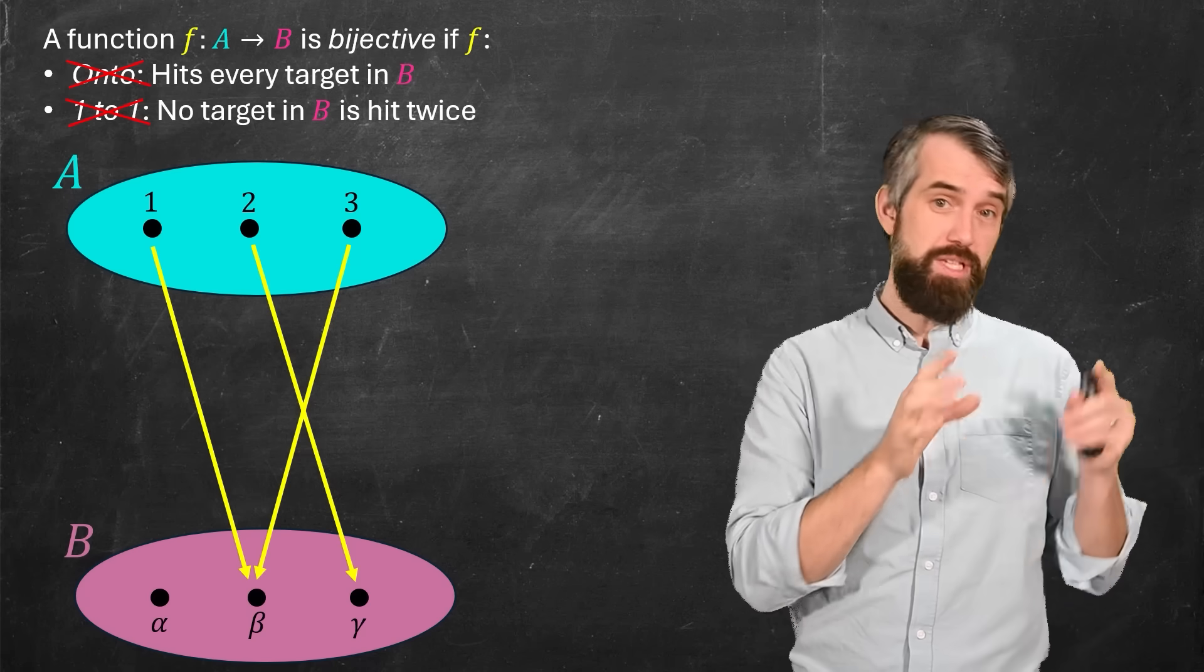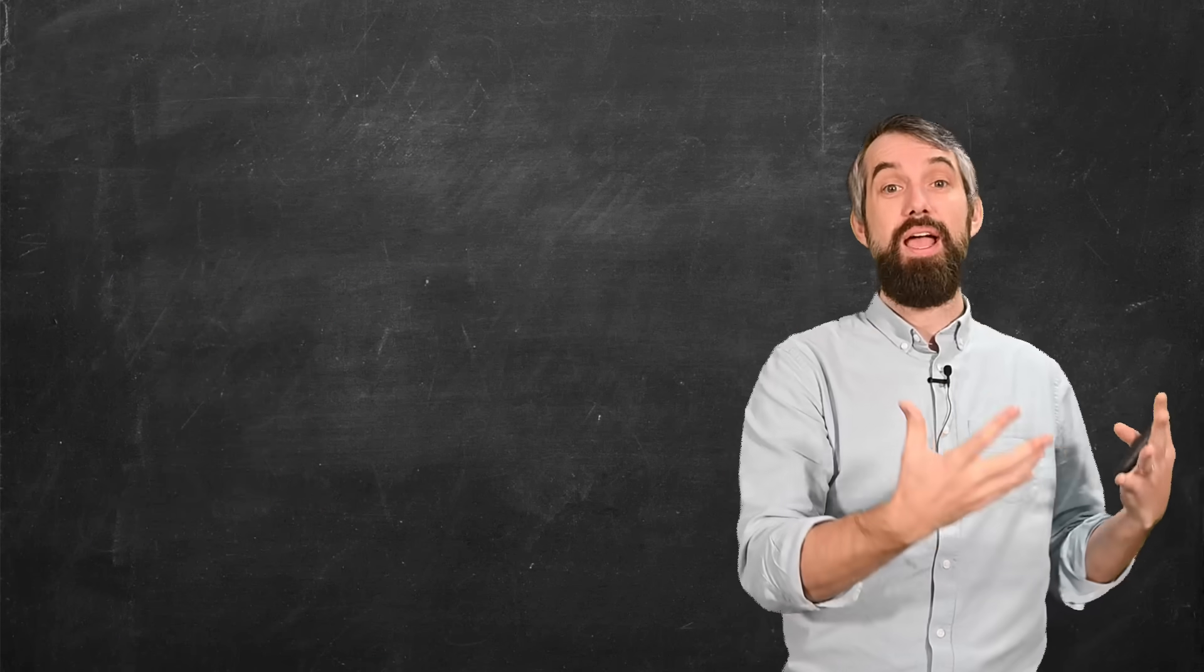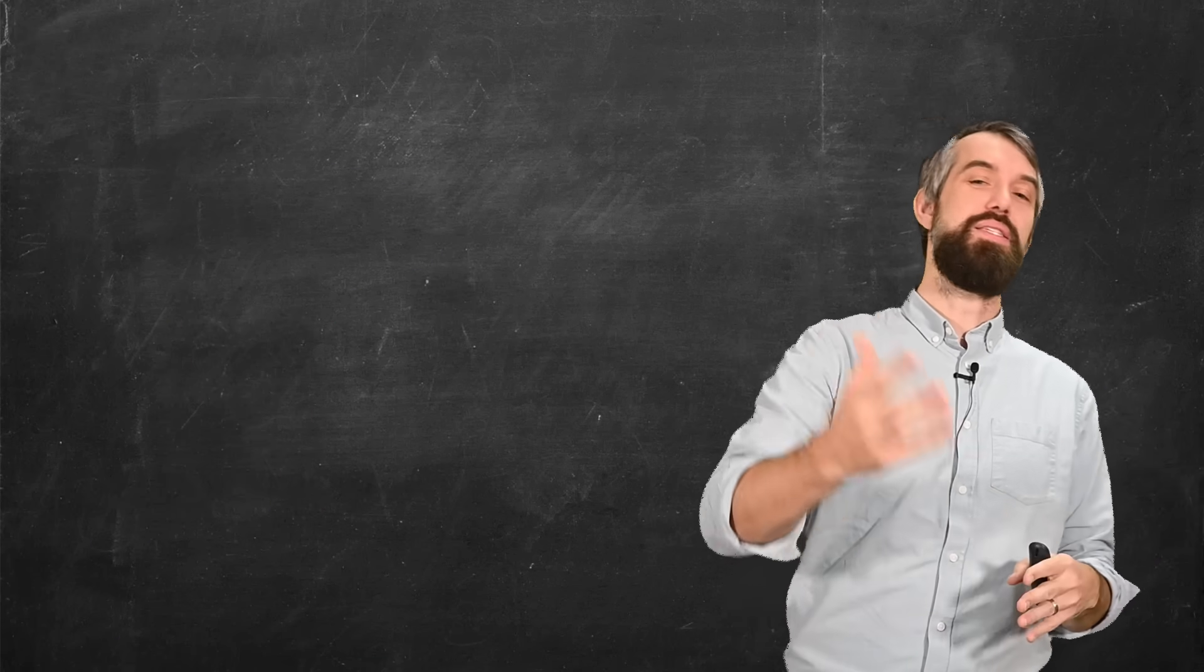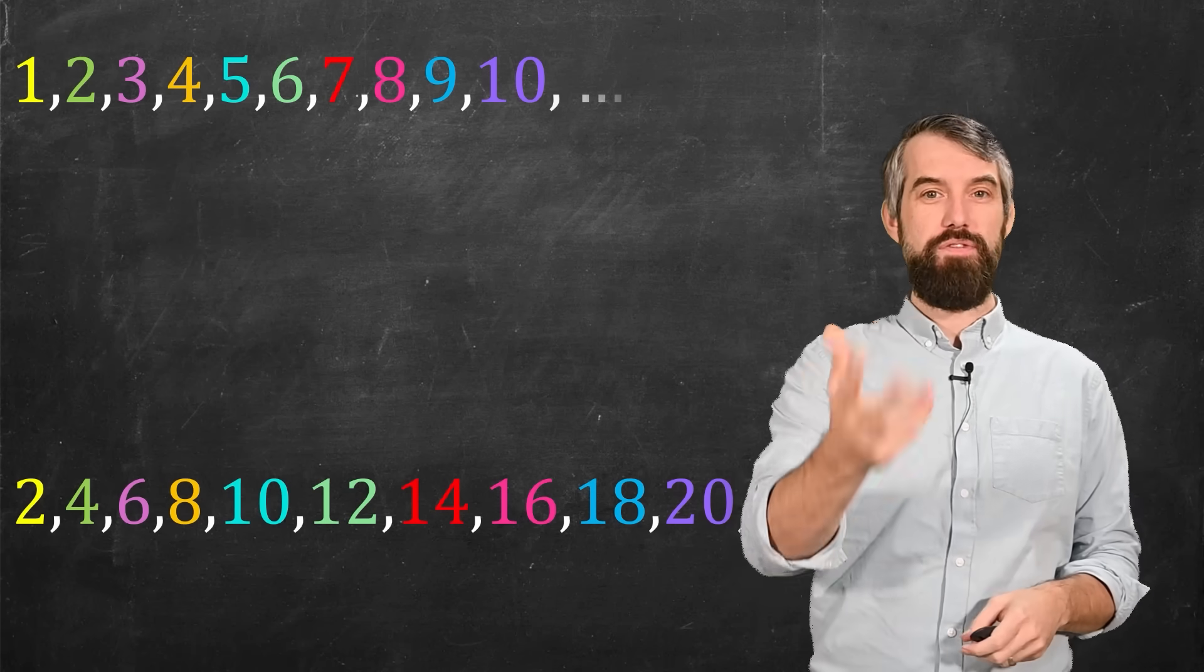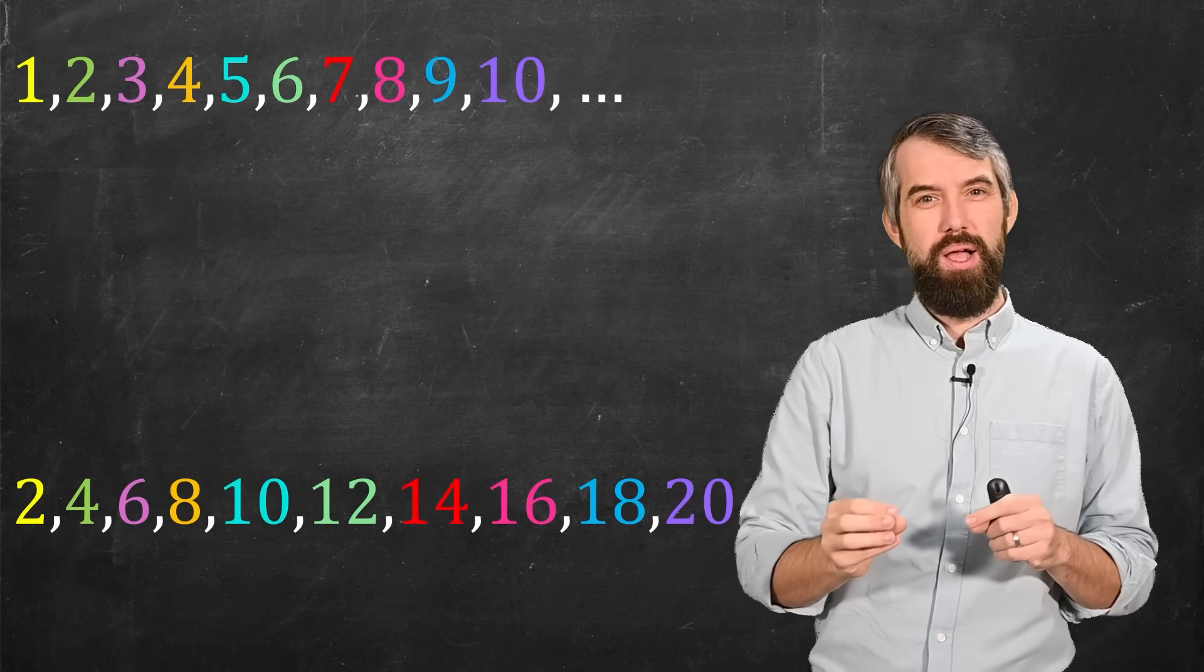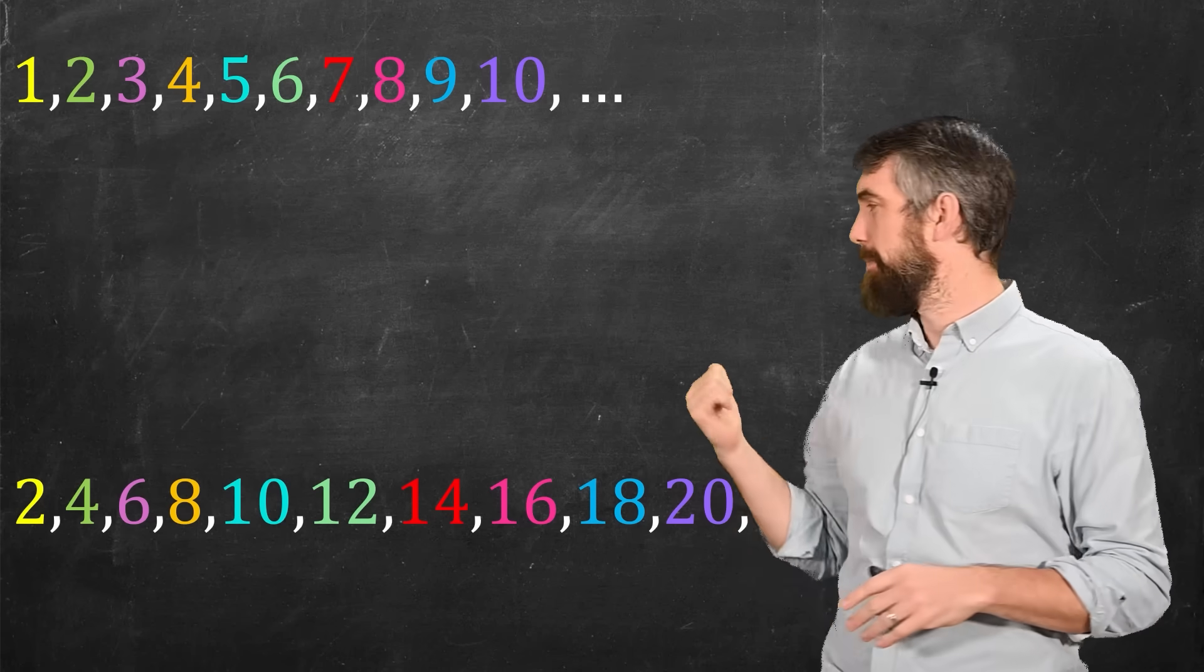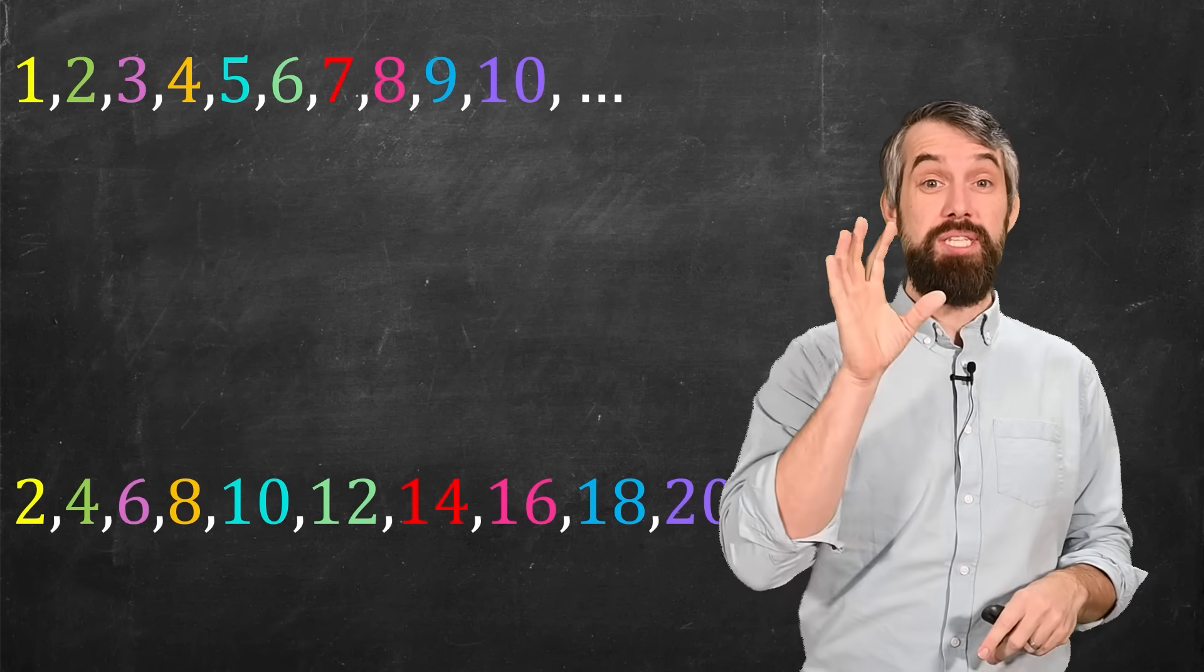In general, if you have a function that's bijective, this is our notion in mathematics of the set having the same basic size. We extend this to all sorts of funny infinite sets. For example, if you consider all the natural numbers, and then all the even natural numbers, like 2, 4, 6, 8, 10, and so on. I mean, are those the same size? According to mathematicians, yes they are.